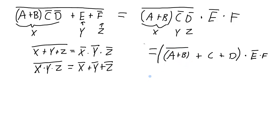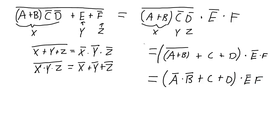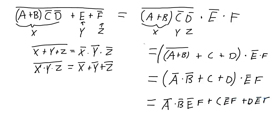Still not done — I can apply De Morgan's theorem to the NOT (A or B) term. This simply becomes NOT A AND NOT B. So the expression becomes: NOT A AND NOT B ORed with C ORed with D, ANDed with NOT E·F. That's as far as De Morgan's theorem can take us. Expanding to sum of products: NOT A·NOT B·NOT E·F, ORed with C·NOT E·F, ORed with D·NOT E·F. Now I'm finished with the simplest sum of products form.